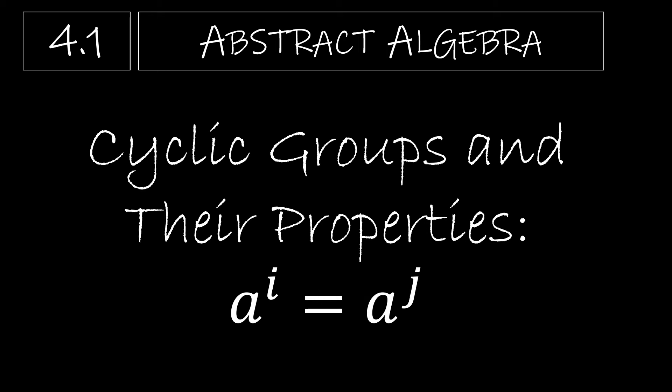This is the first video for Chapter 4. In general I've been trying to create one video per subsection of our text, but in this case I'm actually going to create two videos out of the subsection of cyclic groups and their properties, because there are two properties and each property has several corollaries.